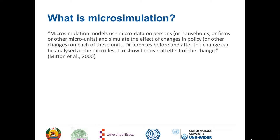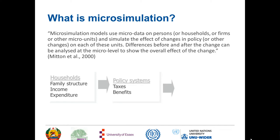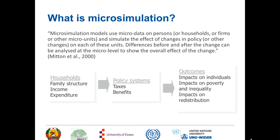How can we show this diagrammatically? First you take a household survey that has details of family structure, income and expenditure, and then you apply to that household survey a system of rules which reflect the policy systems on taxes and social benefits. That generates an output file which allows one to assess the impacts on individuals — the impacts on poverty and inequality, and the impacts on redistribution.